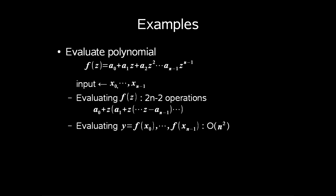In this next example we will be looking at evaluating a polynomial. We have some function namely f of z, which is calculated as shown here: a0 plus a1 times z plus a2 times z squared up to an-1 times z to the power of n-1. So we want to evaluate f on our input x0 up to xn-1. To answer our query on f will take us 2n-2 operations, because we can write the calculation as shown below. So to find all outputs in y equals f of x0 up to f of xn-1 would take us order n squared operations.